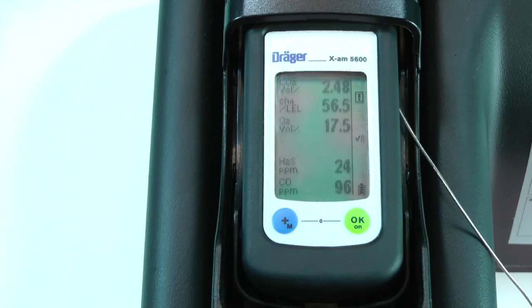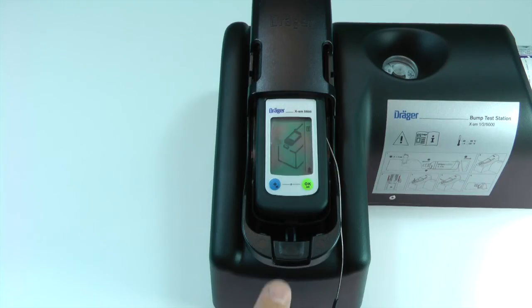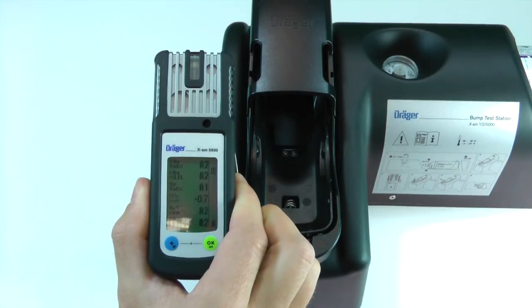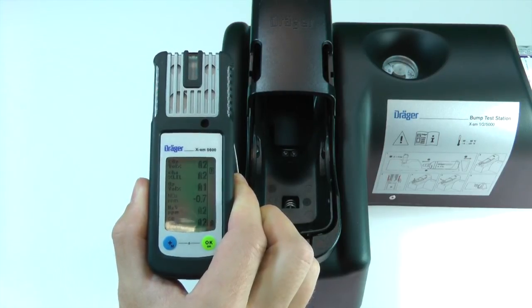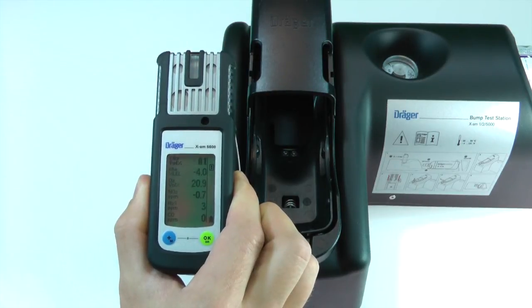Once the bump test is complete, the screen will display a graphic that indicates that the instrument can be removed. Press the release button on the cradle to remove the instrument from the bump test station. You can press the OK button to acknowledge any A1 alarms that remain.